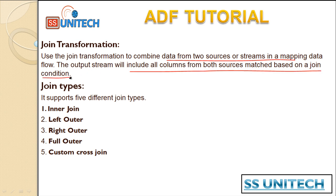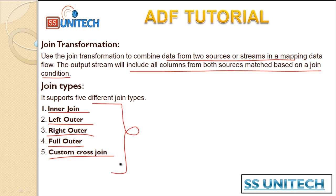The join transformation is very similar to joins inside SQL Server. Join types are mainly five different types: the first is inner join, second is left outer join, third is right join, then the full outer join, and then the custom cross join. These five types of joins are available inside Azure Data Factory, the same as we have already seen inside SQL Server.